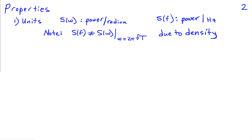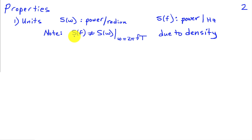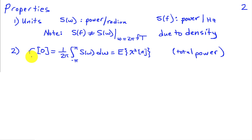The power spectral density has a number of important properties. First, it's a density, so the units are power per radian when frequency is in radians, or power per hertz when frequency is in hertz. Because of this normalization, we can't simply substitute between discrete time frequency omega and continuous time frequency in hertz — the amplitudes must also scale, because the total power or variance is given by the area under the power spectral density normalized by 2 pi.